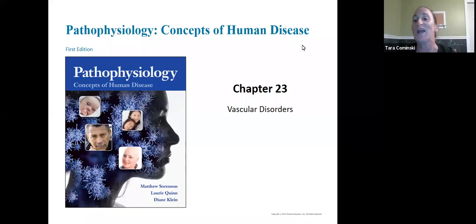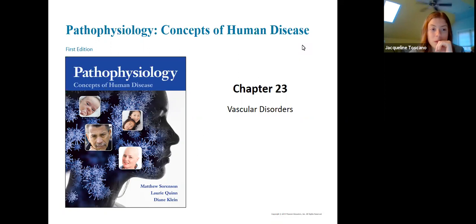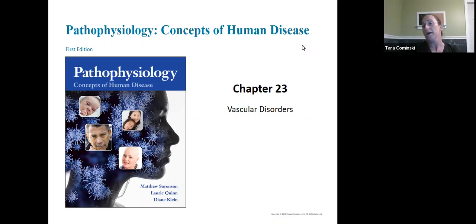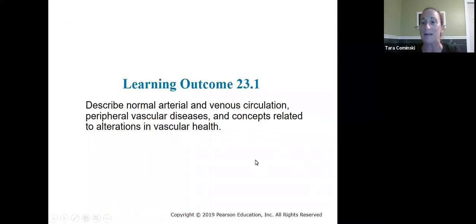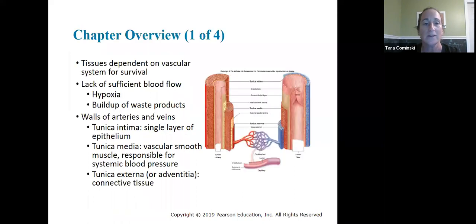For Chapter 23 on vascular disorders, when we say vascular disorders we're referring to the circulatory system — particularly arteries and veins. That's how the chapter is divided: we'll talk about arteries more specifically first, and then veins. Just a bit of background to remind us, since we've covered this in anatomy and physiology. In terms of structure and function, there are major differences between veins and arteries.